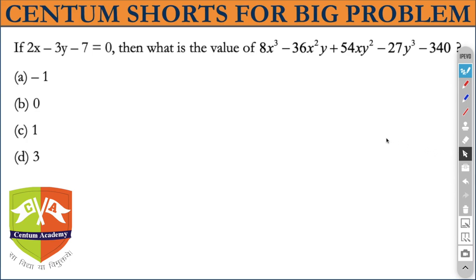Okay guys, so here goes another question. If 2x - 3y - 7 = 0, then what is the value of 8x³ - 36x²y + 54xy² - 27y³ - 340? Let me freeze one variable. If I take x equal to 0, I get y equal to 7/3. But 7/3 is not very comfortable, so I will take y equal to 0, which means x automatically becomes 7/2.